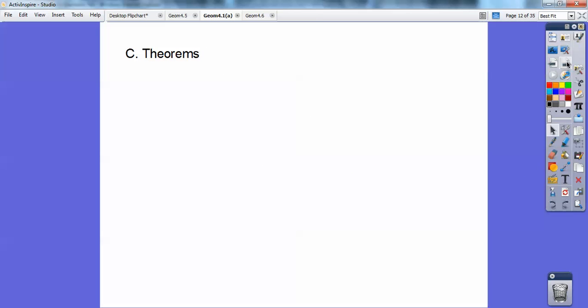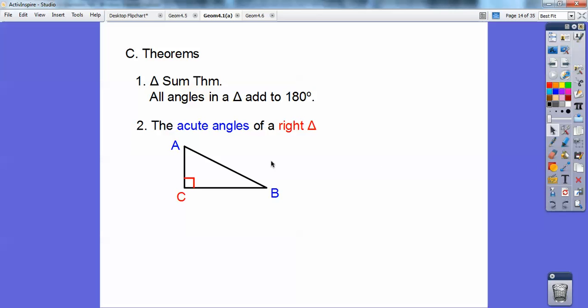Some theorems. Triangle sum theorem - all angles in a triangle add to 180. We've discussed that already before. The acute angles - I did this in blue, so you're looking at this blue A and this blue B. These are my acute angles in this right triangle. So the acute angles of a right triangle, let me talk you through this.